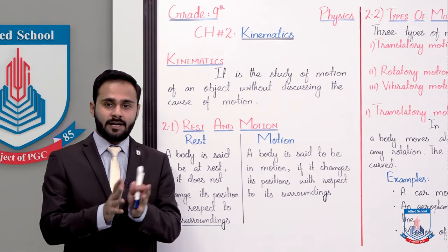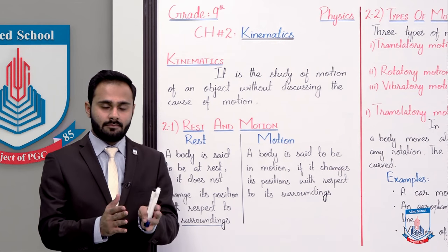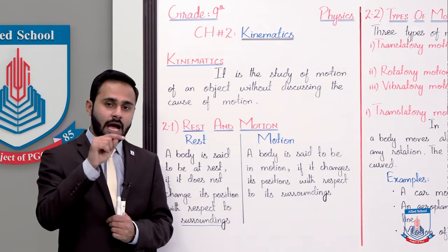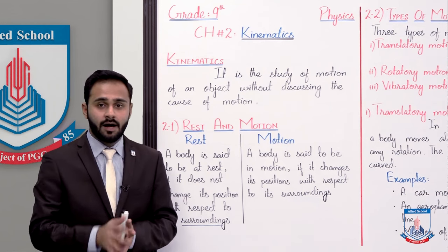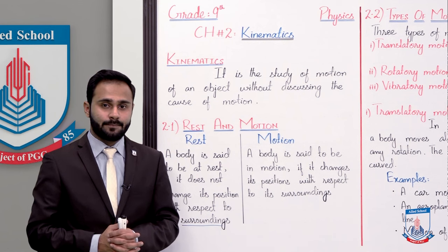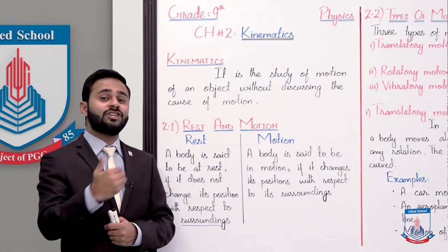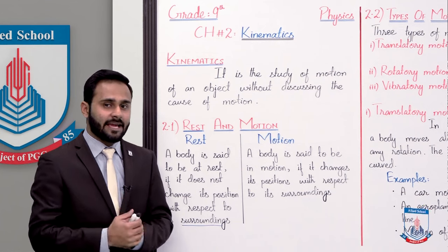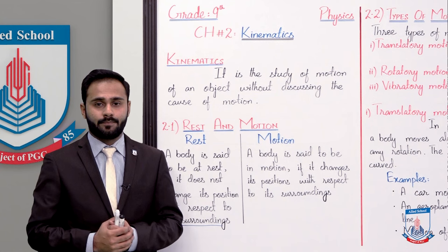Let's suppose ki aapke ghar mein ek table kaim rahi hai. Aapke according — means surroundings let's suppose aap hain — woh table move nahin kar rahi, woh apni position change nahin kar rahi. Toh mai kahun ga ki woh table rest mein hai. Similarly, ek ball kuch hum throw karte hain, toh woh ball apni position change kar rahi hai. Ab hamare according woh ball move kar rahi hai, toh hum yahan keh sakte hain ki yeh ball motion mein hai.